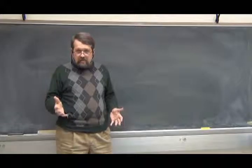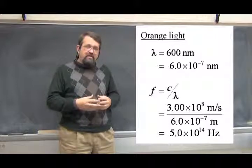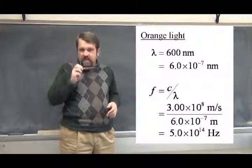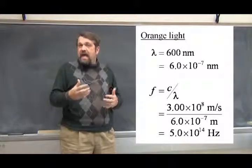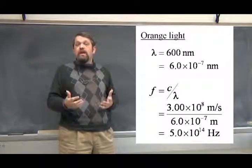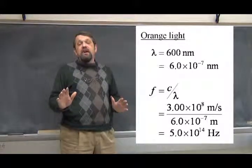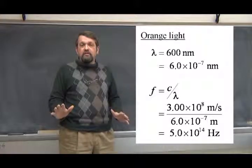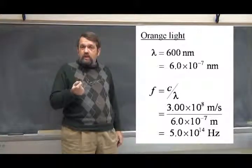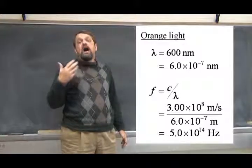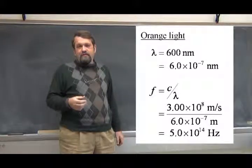The wavelength of visible light, on the other hand, is much shorter. Let's consider orange light, which has a convenient wavelength of about 600 nanometers — that's 6 times 10 to the minus 7 meters. At the speed of light, you can work out the frequency, and when you work it out, you get 5 times 10 to the 14th hertz. That's 500 terahertz, which is a stupendously high frequency. So visible light has very short wavelength — less than a millionth of a meter — and very high frequencies in the hundreds of terahertz range.